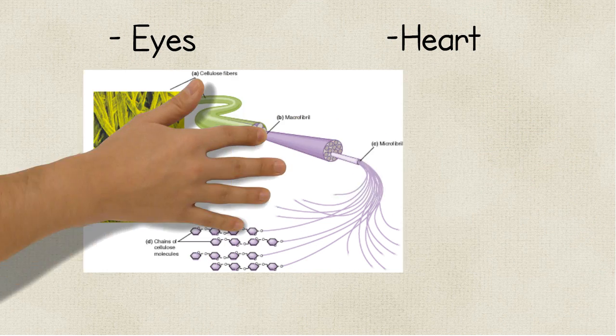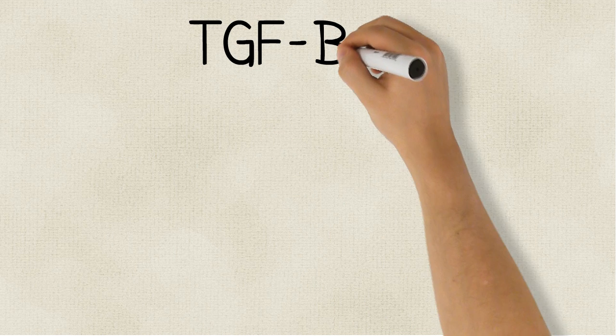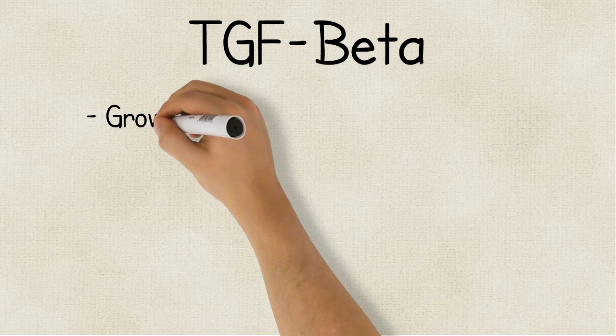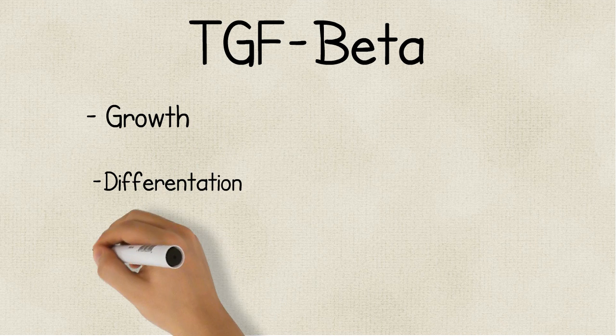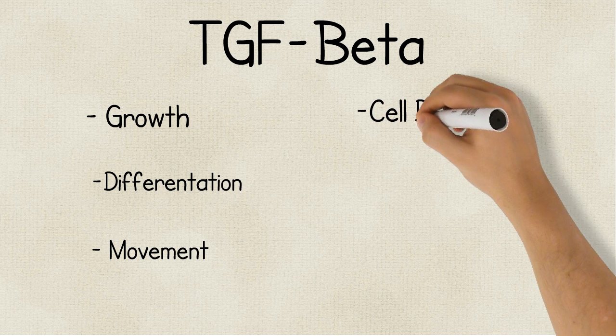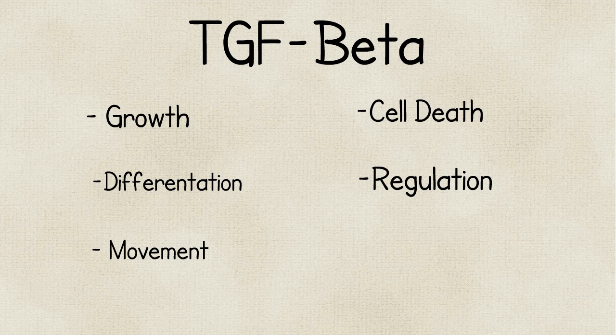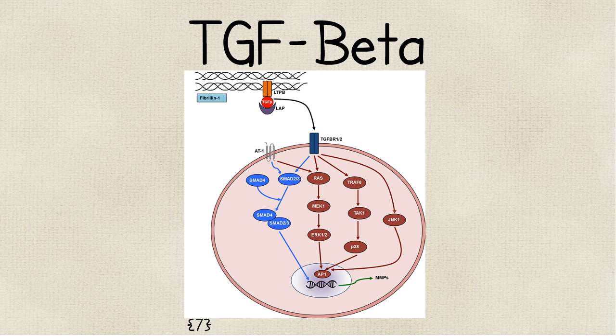These microfibrils also store a valuable growth hormone protein known as Transforming Growth Factor Beta. For this, we'll just call it TGF Beta. TGF Beta affects the growth, differentiation, and movement of cells. TGF Beta is also responsible for cell destruction and growth regulation. The microfibrils that are normally made by fibrillin-1 usually inactivate TGF Beta by storing it as a regulatory mechanism.